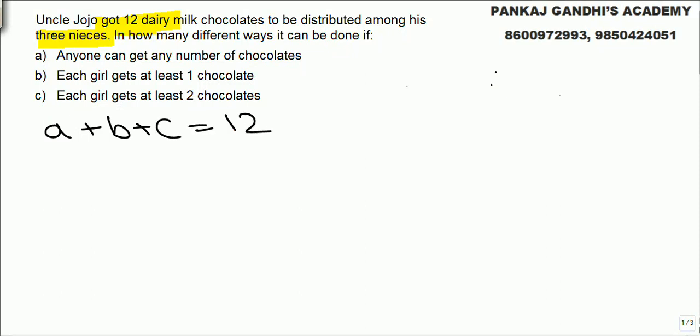Now let's forget about this thing. We'll take a very simple example. Let's say there are only 2 nieces and 5 chocolates are there.